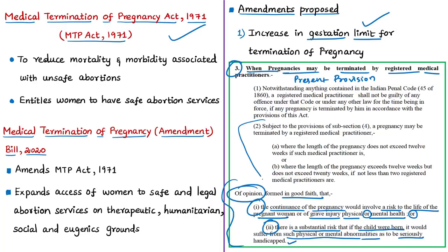Based on these opinions, the gestation limits under the current MTP Act are: if the gestation period is up to 12 weeks, one medical practitioner is required; if it exceeds 12 weeks but does not exceed 20 weeks, at least two registered medical practitioners are required. These conditions also apply when pregnancy is allegedly caused by sexual assault including rape, as such pregnancy is presumed to constitute a grave injury to the mental and physical health of the pregnant woman.